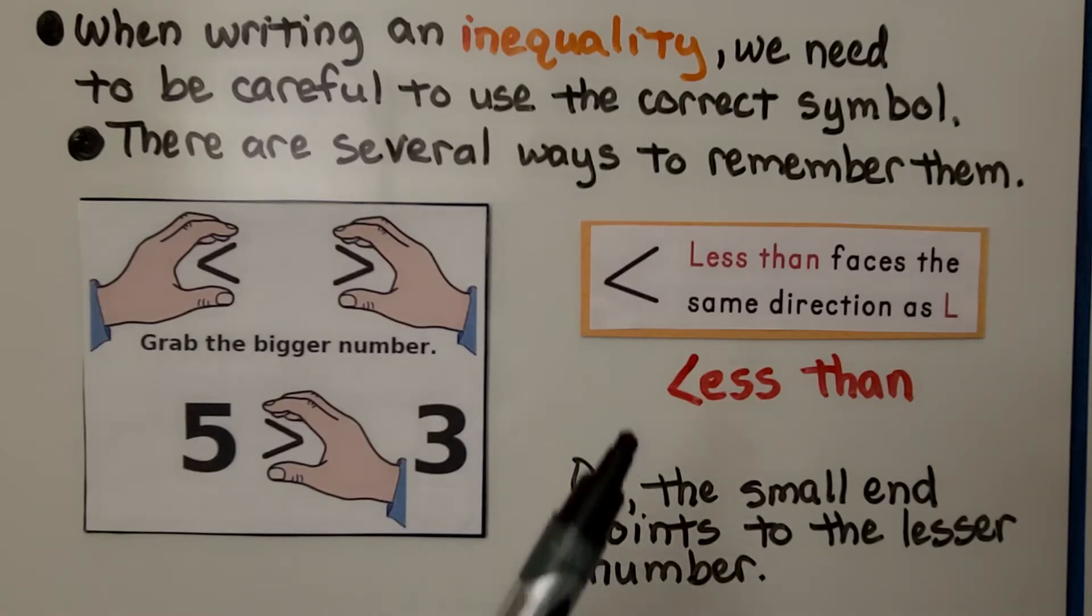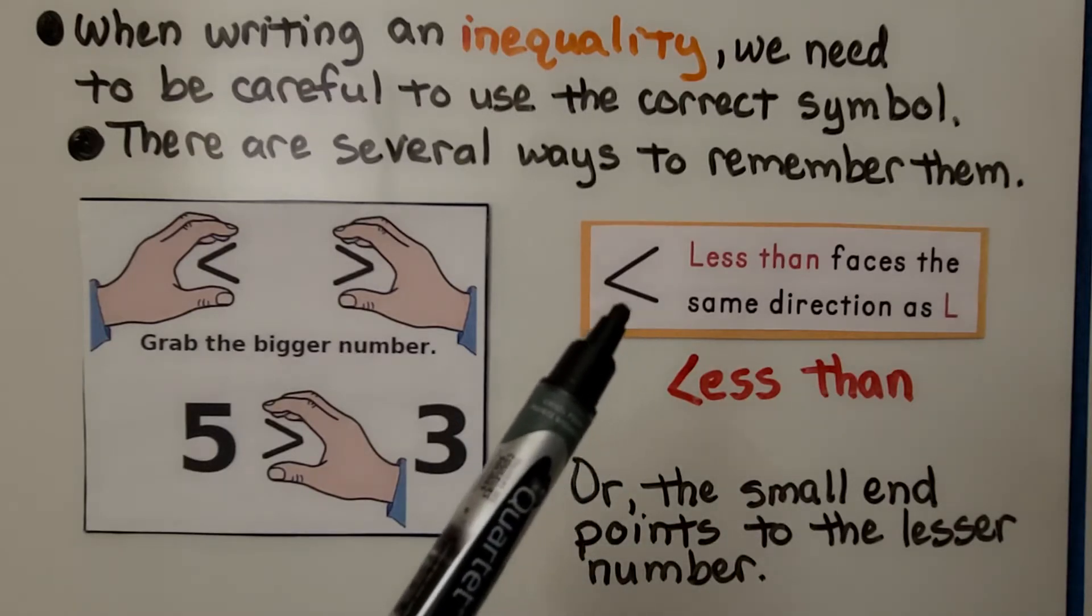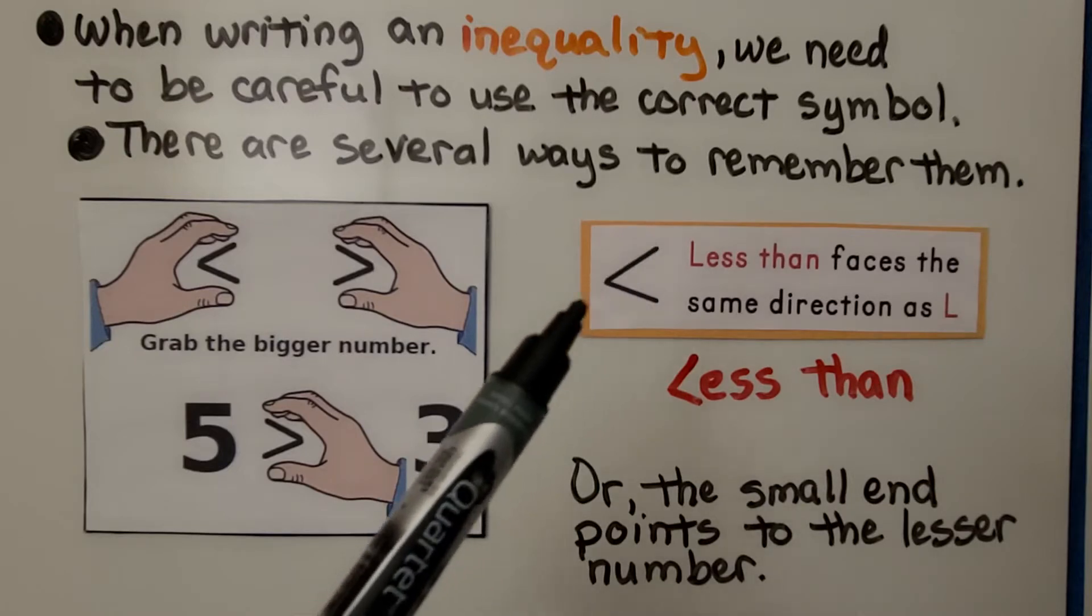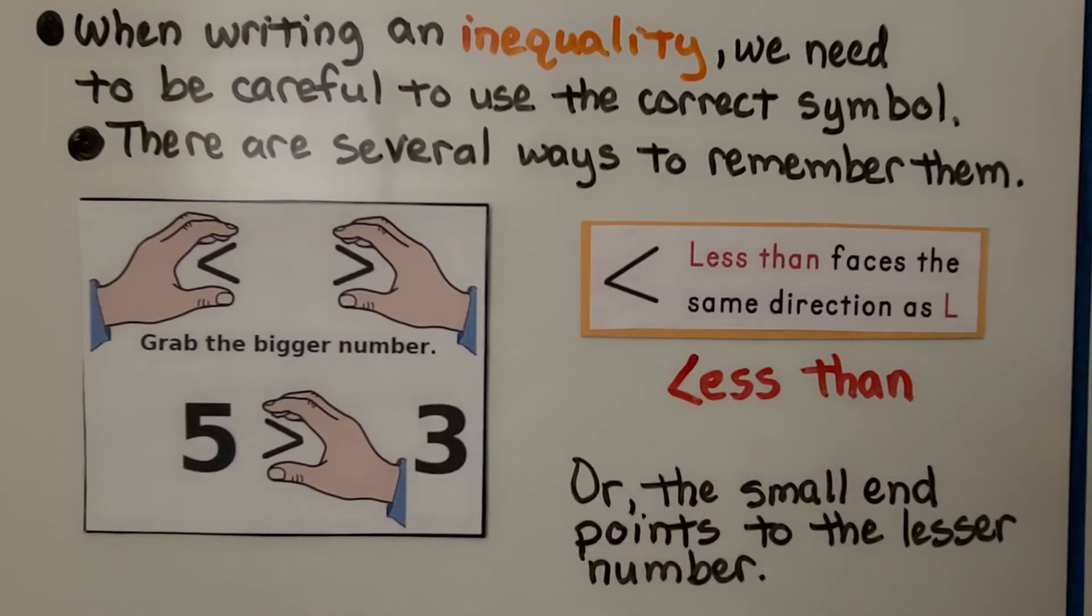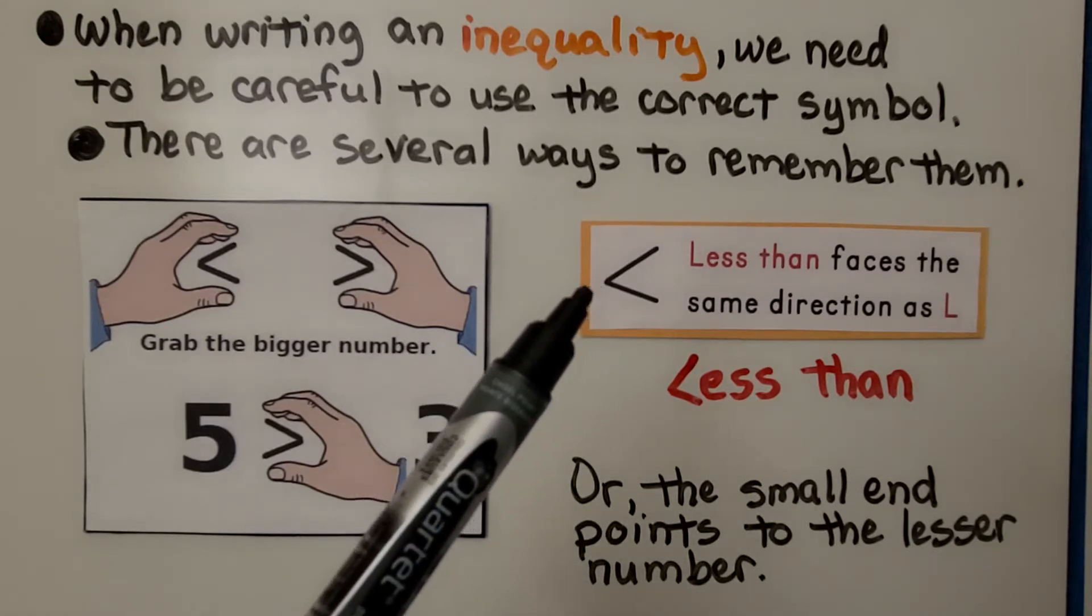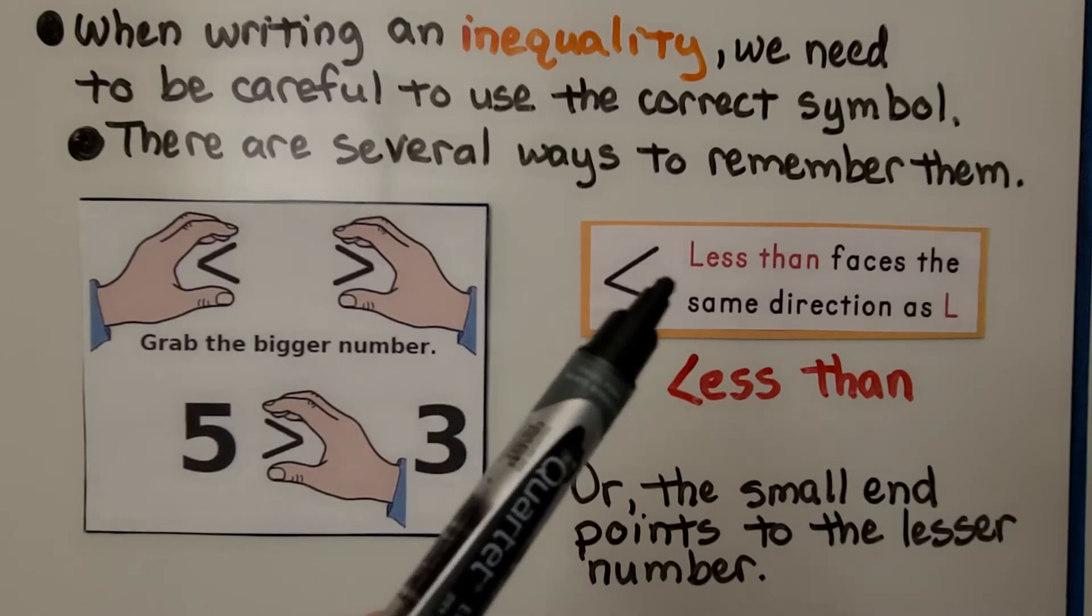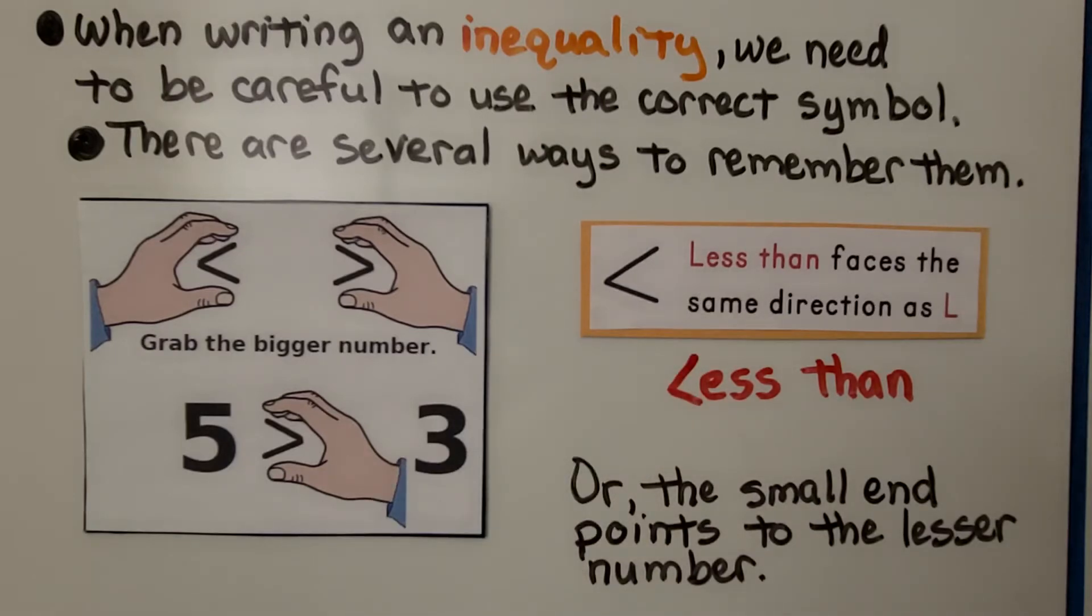And you can also think of it as this less than symbol is kind of shaped like a crooked L for less than. You can also think of it as the small end points to the lesser number and the big open side goes towards the bigger number, the greater number. And maybe you can think of your own way to remember it.